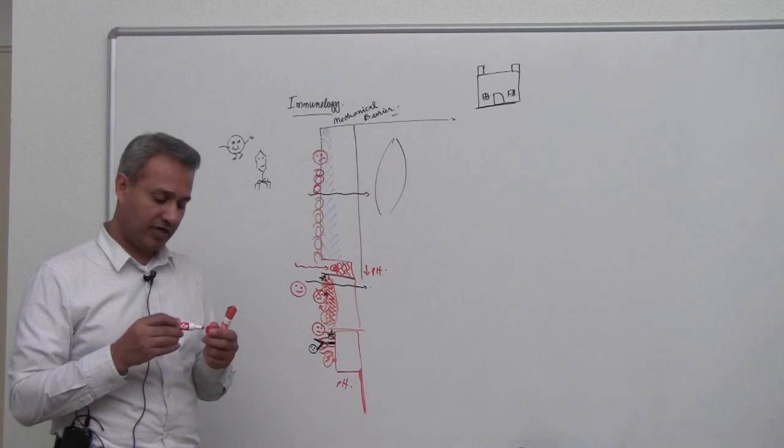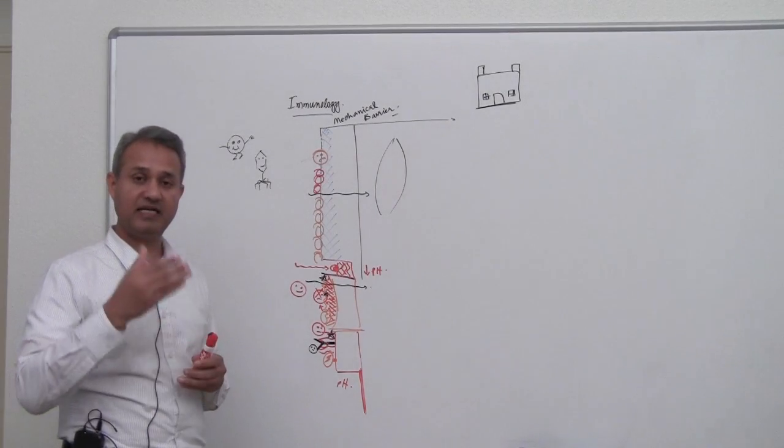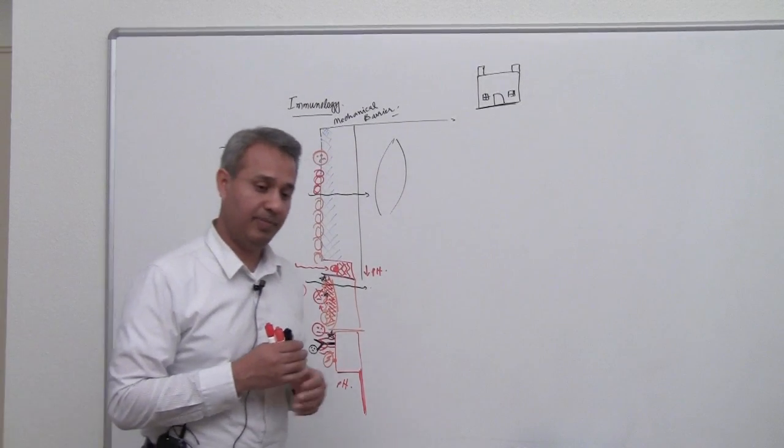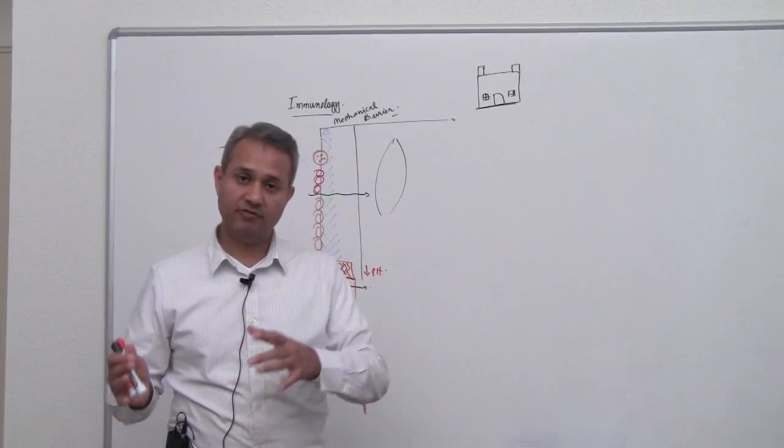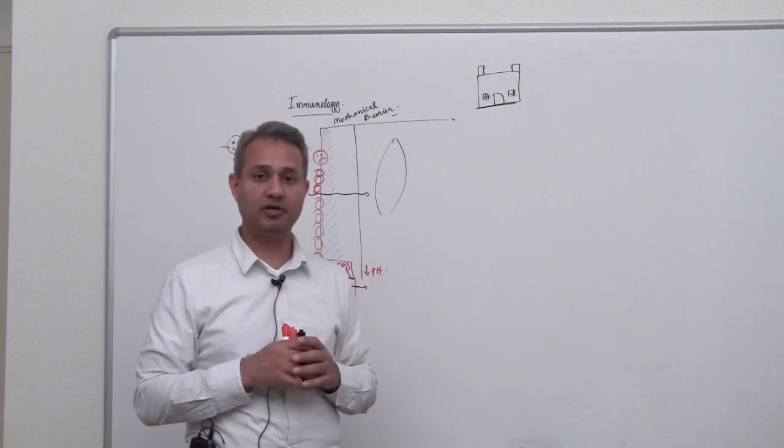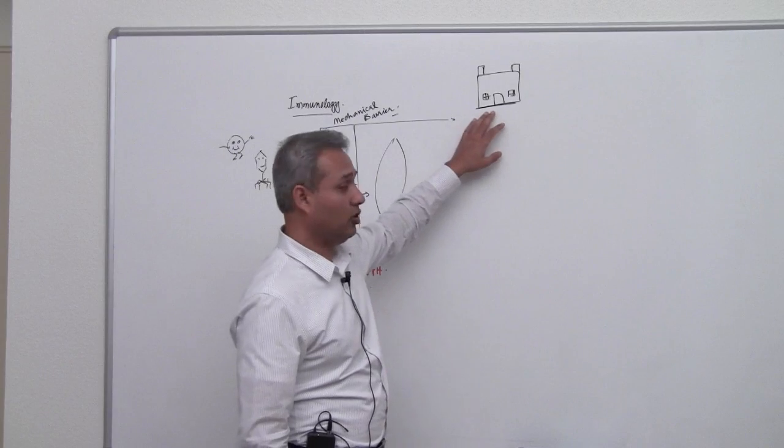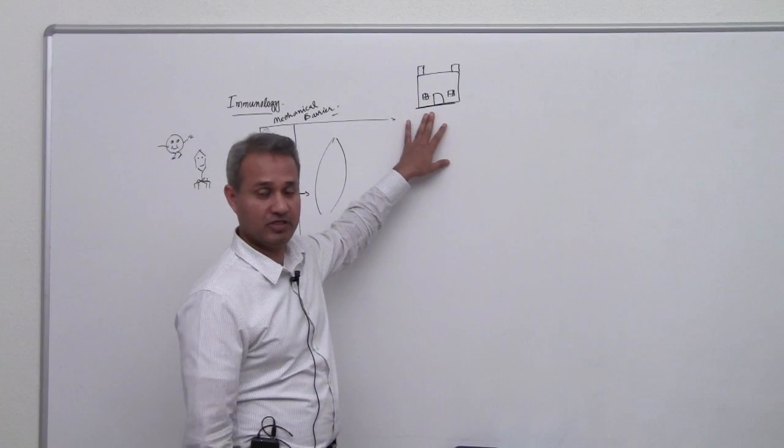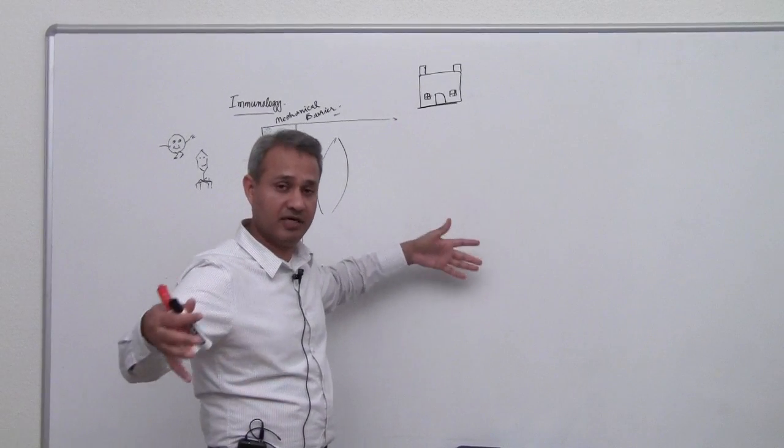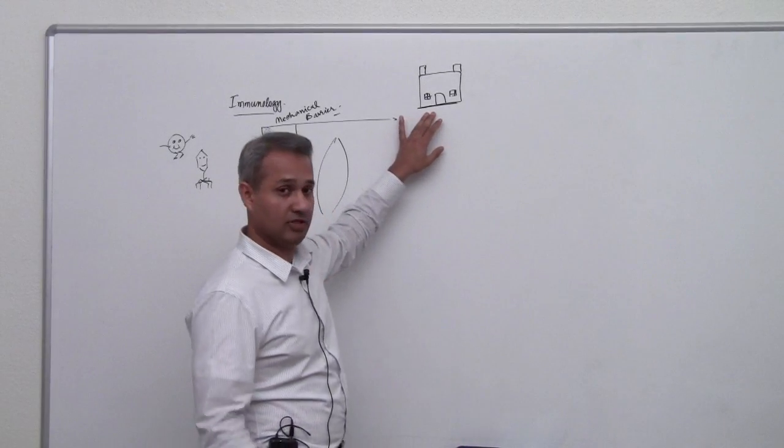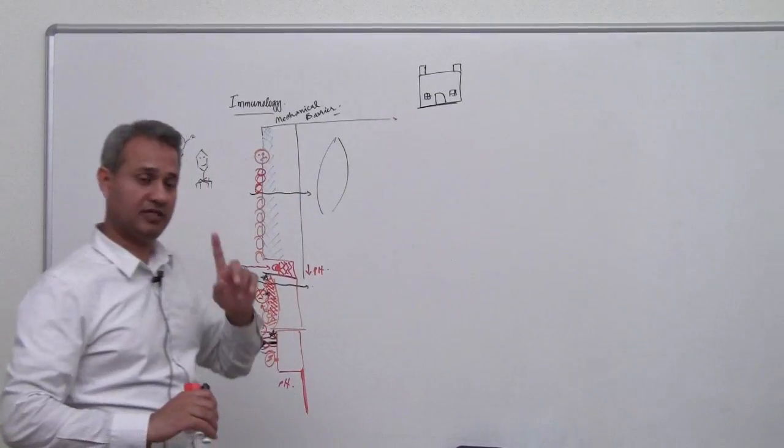There are many ways of presenting barriers for entry of pathogens into our body. That is equal to the walls of a fort which are strengthened, bigger, thicker, and allow invaders to stay outside.